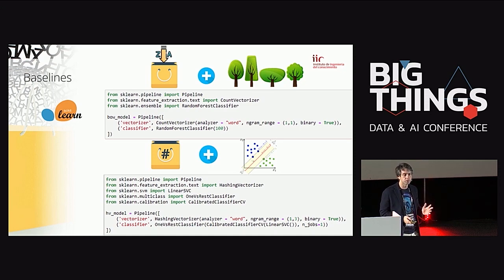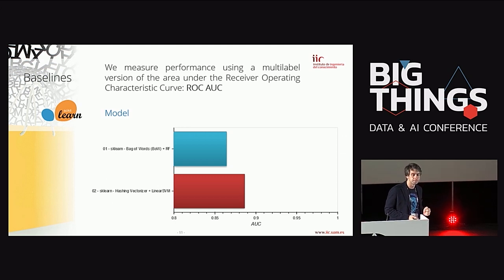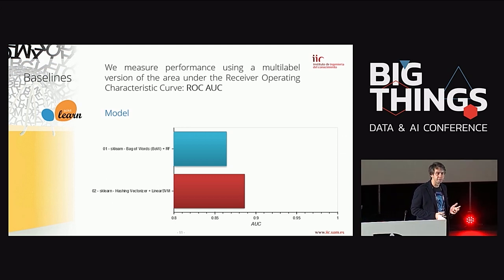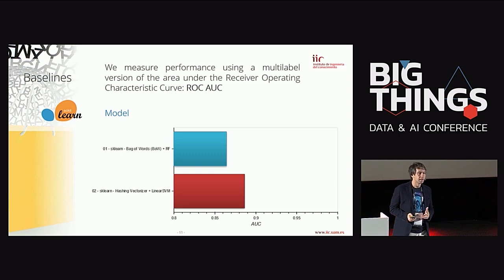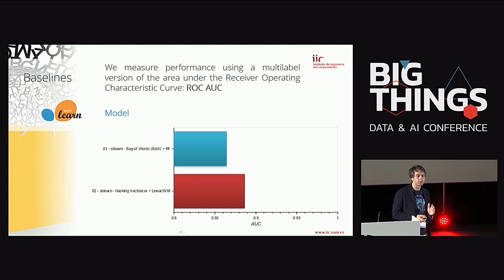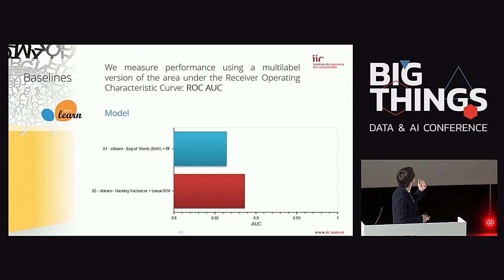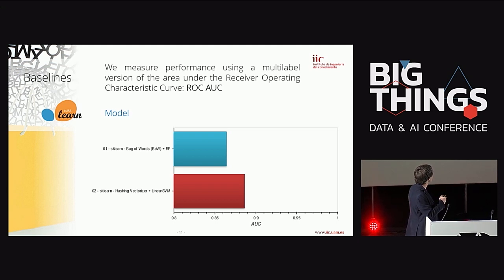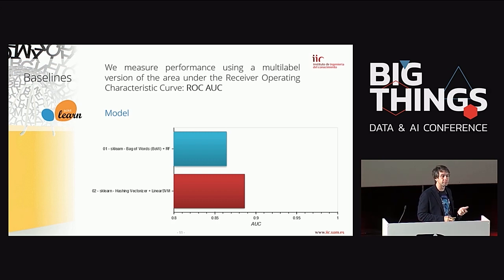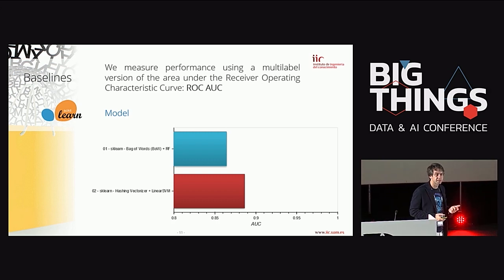Training these models on a handful of training data, you get results on the test data. This problem is fortunately very unbalanced — most internet comments are non-toxic — so we measure area under the ROC curve (AUC) rather than accuracy. The simple bag-of-words method gives about 86% AUC, and the hashing vectorizer using word pairs and triplets works a little bit better.